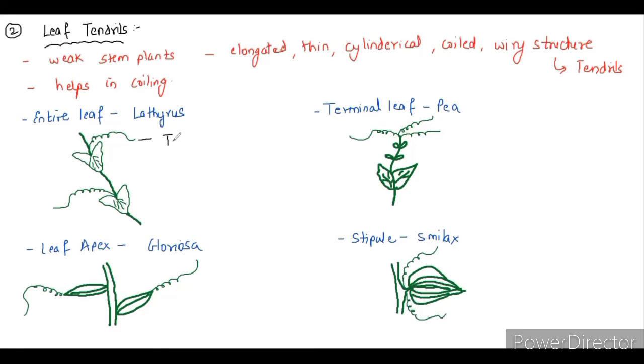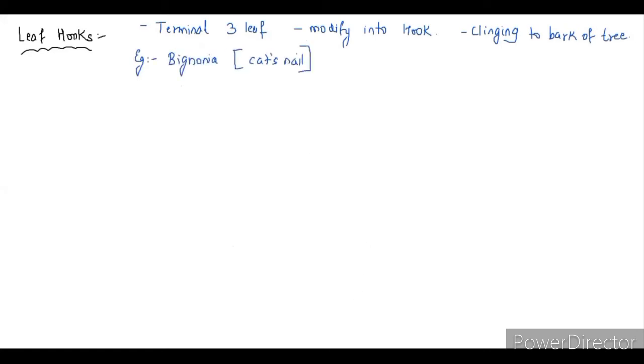So leaf undergoes such kind of modifications just to survive, reproduce, and propagate. Third modification is of leaf hook. The terminal three leaves modify themselves into hook. Hook means cat nail-like structure. It is meant for clinging to the bark of tree. Example is Bignonia. It is cat's nail. In order to take the support of other plant, in order to grow, the terminal three leaf, they develop some hook-like structure and these hook-like structures help them to grow and move towards the upper part of the plant.